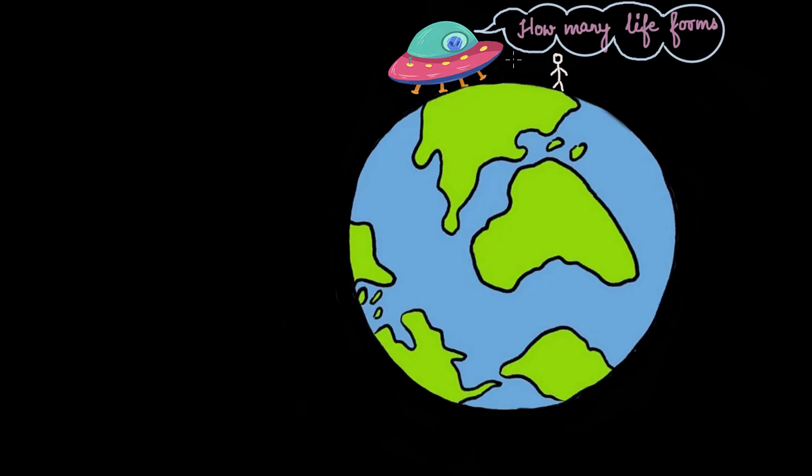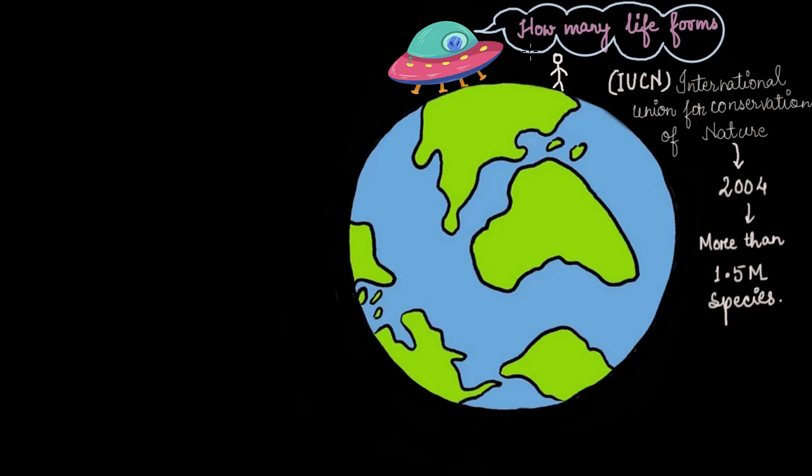So this helpless embarrassed scientist, just for the sake of answering the alien, thought of telling him about IUCN. The scientist told the alien that we are human beings with brains, the most intelligent creatures on this planet, and we have created something called IUCN, International Union for Conservation of Nature, that releases the Red Data Book. In 2004, the book said that we have successfully discovered and documented a little more than 1.5 million different species.